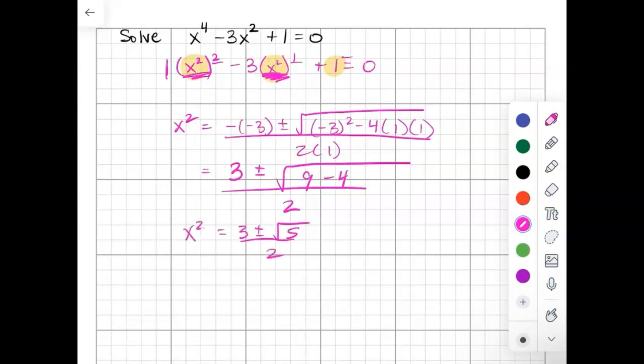But remember, this is x squared. So we still need to take the square root of both sides. Any time you take a square root, you get plus or minus. So we get plus or minus the square root of 3 plus or minus the square root of 5 over 2.